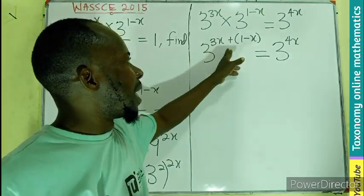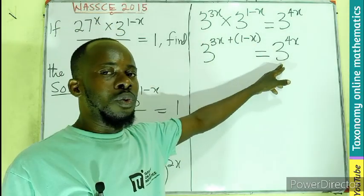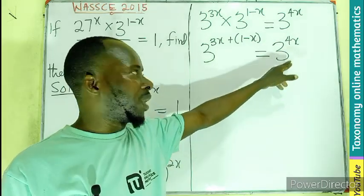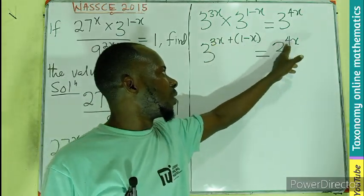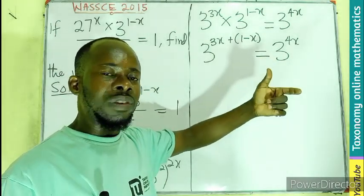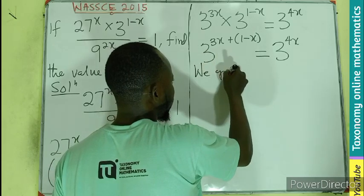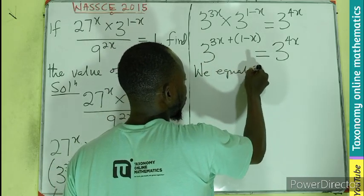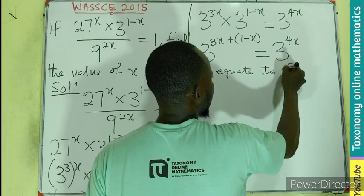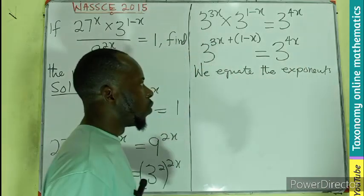Whatever that simplification will be, we are seeing base 3 equals base 3. Therefore, the exponents should also be equal in order to satisfy the equal sign.